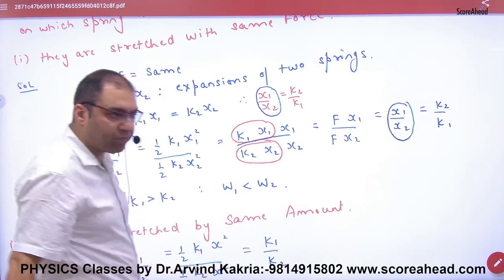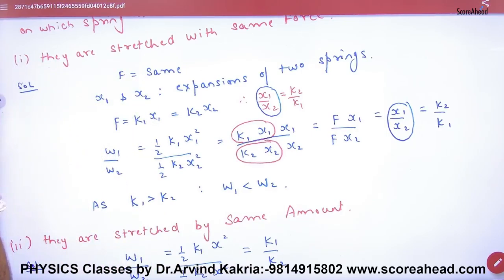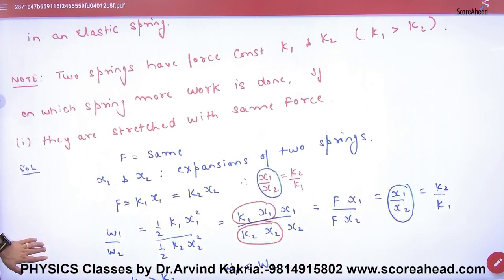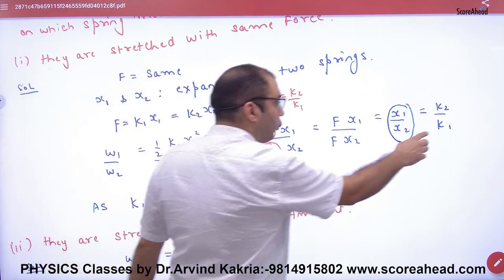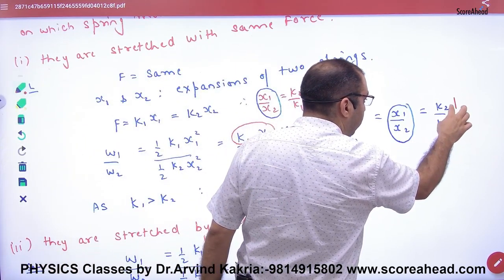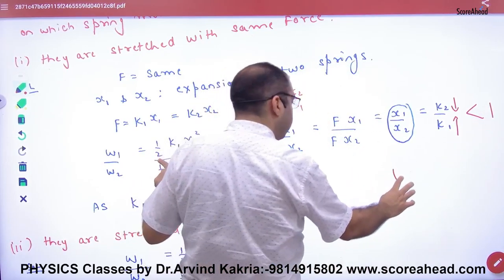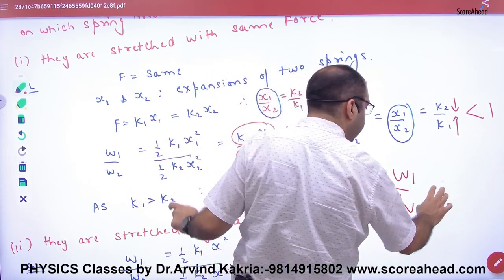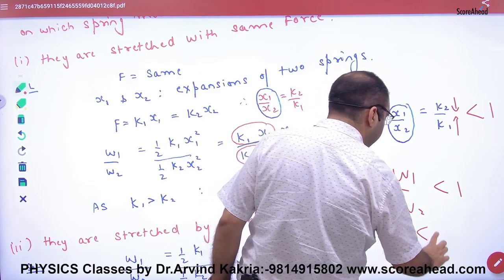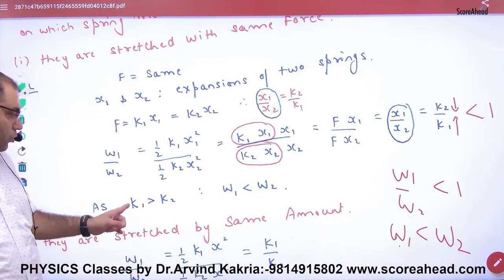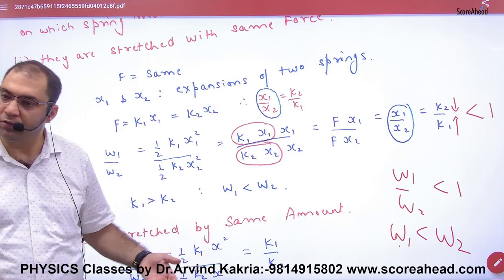Clear? What is the answer? K1 is bigger and K2 is small, so the denominator is bigger and numerator is small. So the fraction is less than 1. This means W1 by W2 is less than 1, so W1 is less than W2. So W2 will be bigger and W1 will be small.